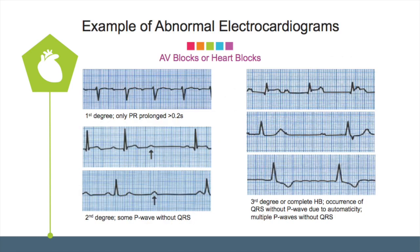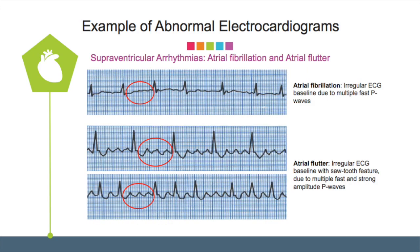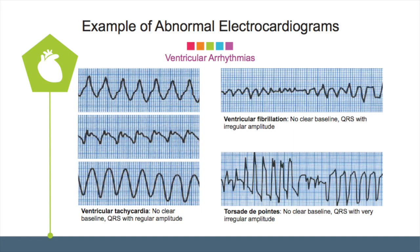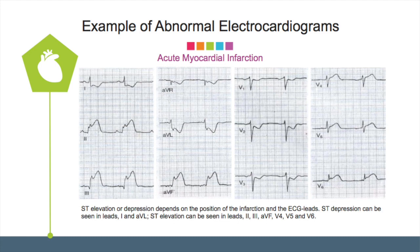The following are examples of heart block — either 1st degree, 2nd degree, or 3rd degree. Next are examples of supraventricular arrhythmias: atrial fibrillation and atrial flutter. Next are examples of ventricular arrhythmias: ventricular tachycardia, ventricular fibrillation, and torsades de pointes. Finally, an example of a 12-lead ECG on acute myocardial infarction — look for ST depression on leads 1 and AVL, and ST elevation on leads 2, 3, AVF, V4, V5, and V6.